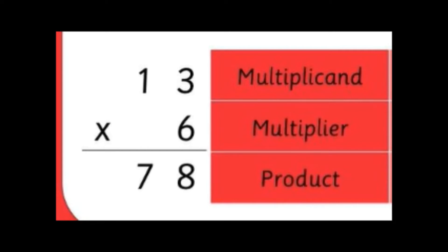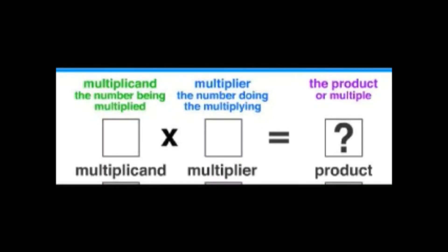Now the meaning of the parts of multiplication. Multiplicand means the number being multiplied. Multiplier means the number doing the multiplying. And the answer is called product or multiple — so we have two names for the answer of multiplication: you can call it product or multiple. That's all for multiplication.